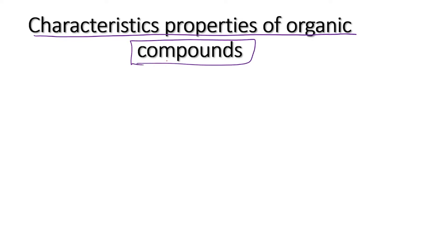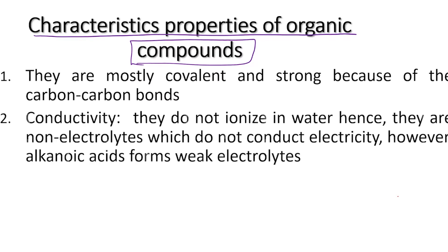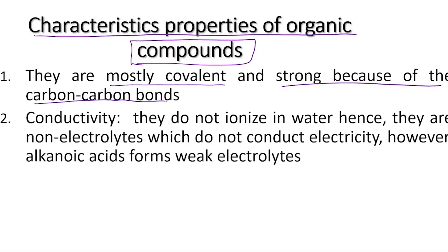Next are the characteristic properties of organic compounds. Number one: they are mostly covalent and strong because of the carbon-carbon bond. For example, in a compound such as C₂H₆ (ethane), there is a bond between carbon atoms and hydrogen. The bond that exists between the two carbon atoms makes it very strong — that is why it is referred to as a strong covalent compound.